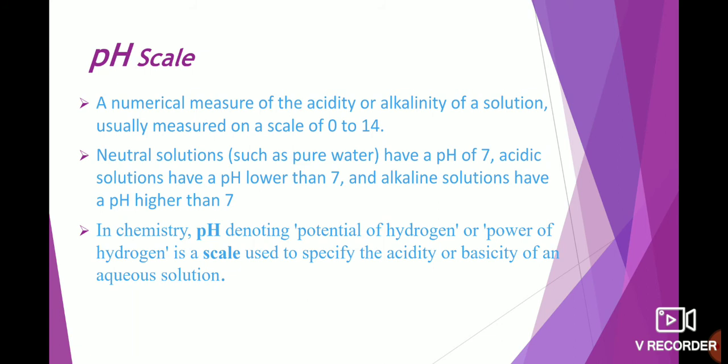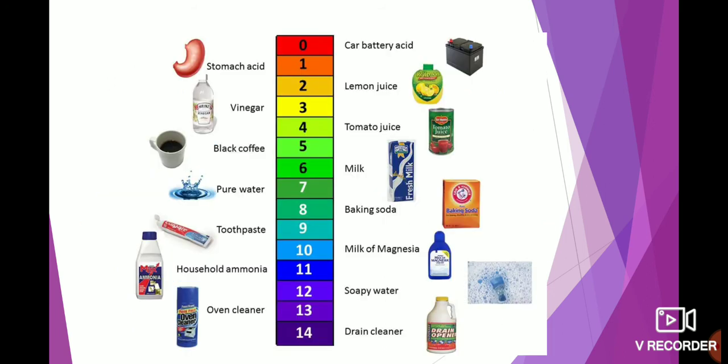An acidic solution has a pH lower than 7, meaning in between 0 to 7. An alkaline solution has a pH higher than 7 — greater than 7. Exact pH of 7 is neutral, pH between 0 and 7 is acidic, and pH greater than 7 is basic in nature.